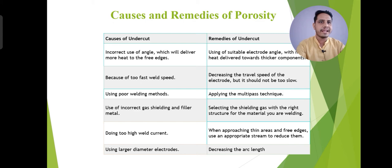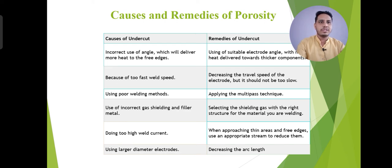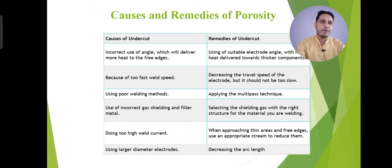Incorrect use of the angle, which delivers more heat to the free edge, is another cause. The remedy is to use a suitable electrode angle with the heat delivered to the thickness of the components. The table gives all causes and remedies so you can easily find out what is the reason behind undercut occurring during the welding process. Too-high weld current and too-fast welding speed are also causes. High welding currents, not using proper electrodes, using poor welding techniques, and excessive weaving are all basic reasons responsible for undercuts.